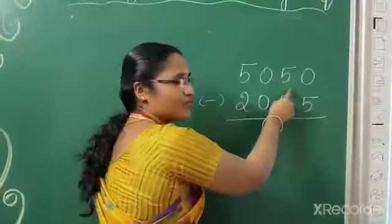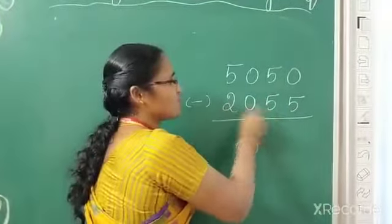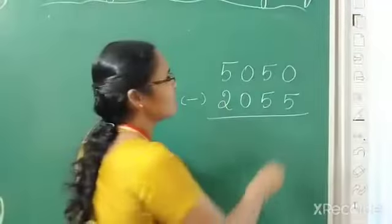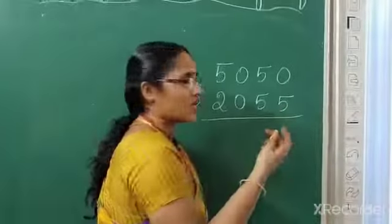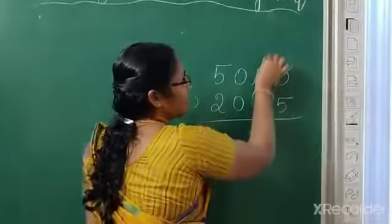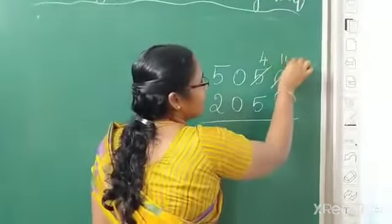First number 5050. Our second number is 2055. Shall we start the calculation? 0 minus 5? We can't do. So get the help from this number. This will become 4 and this will become 10.